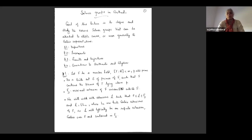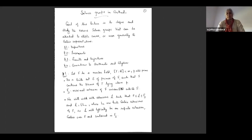F_S denotes the maximal extension of F which is unramified outside of S. We will work with extensions L such that F ⊆ L ⊆ F_S. For us, L will in general be infinite Galois extensions, and the right way to think about these is as a direct limit of finite Galois extensions — L is a union of L_n where each L_n is a finite Galois extension of the base field F.